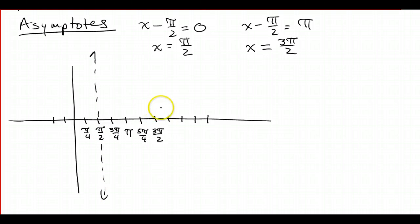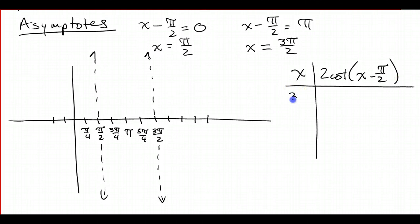And just like with tangent, if you did everything correctly so far, you're going to have three spots in between the asymptotes. And these are the three x coordinates that we want to plug into the function. So I've got x, I've got 2 cotangent x minus pi over 2. So I'm going to substitute in 3 pi over 4, pi, and 5 pi over 4. If you didn't get three spots in between your asymptotes, I would start over and figure out what you did wrong.